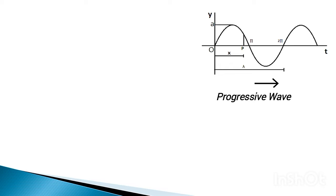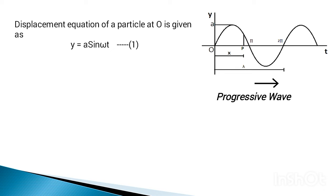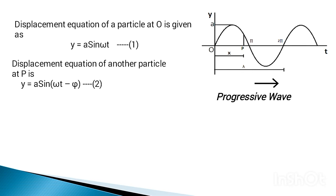The equation of a progressive wave is given by the displacement equations of vibrating particles. Since our wave is a sinusoidal wave, the displacement equation of a particle at O is given by y equals to a sin omega t, where omega is the angular velocity of the wave. We are now interested in finding the displacement equation of another particle at point P, a distance x from origin O.